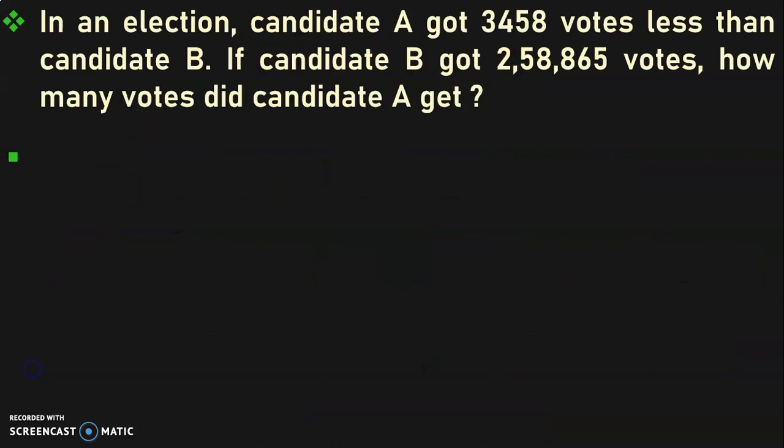In an election, candidate A got 3,458 votes less than candidate B. If candidate B got 2,58,865 votes, how many votes did candidate A get?